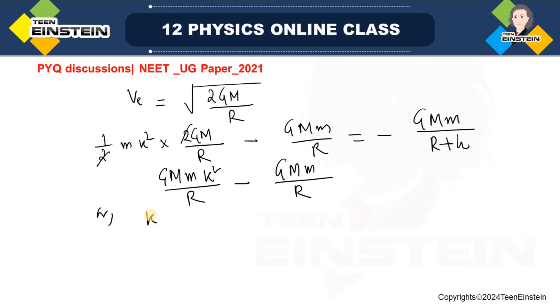So this expression becomes: half m K square, VE square is 2GM by R, minus GMm by R equals minus GMm by R plus h. From here, we can do simplification. This is GMm K square by R, and here it is GMm by R.